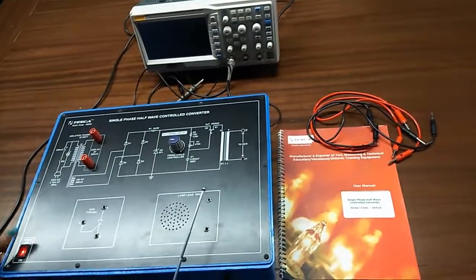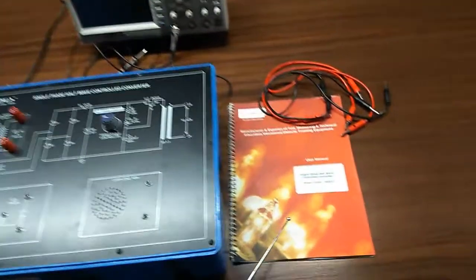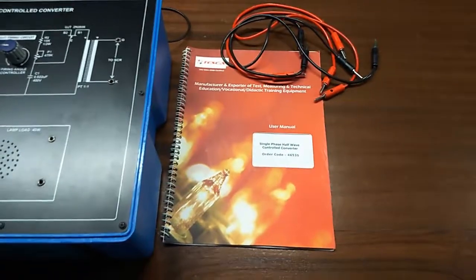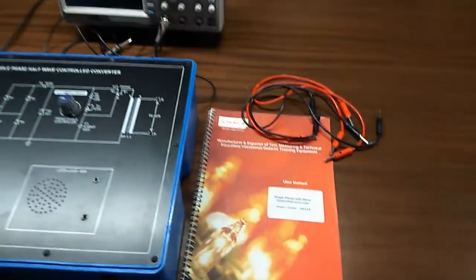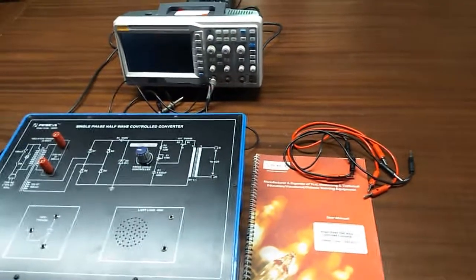This is the main switch to turn on or off the kit. This is the user manual and patch cords. These all are included in this kit. To do this experiment, we will need a CRO or DSO.